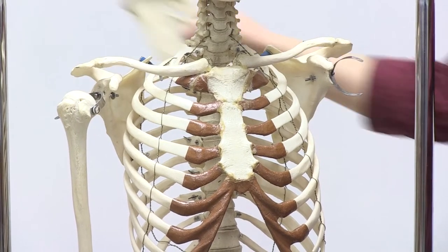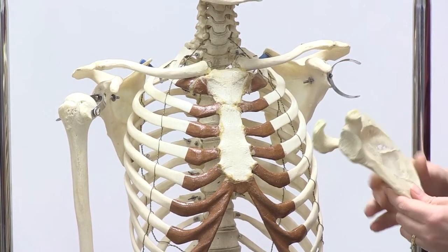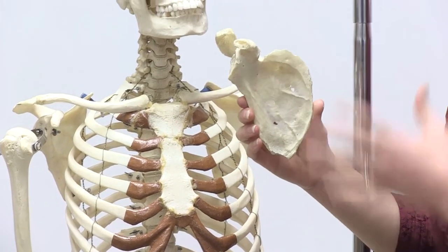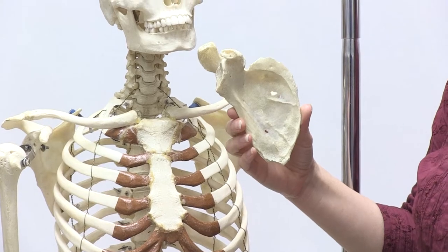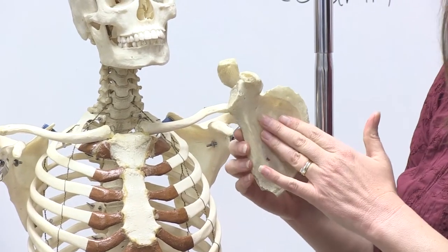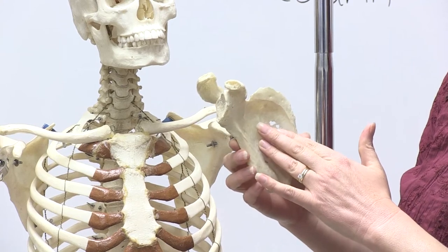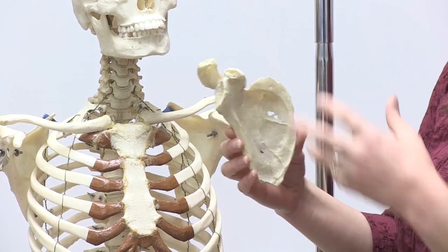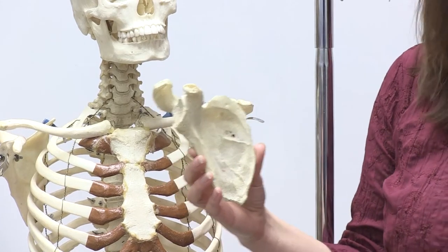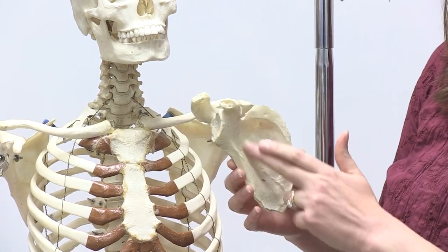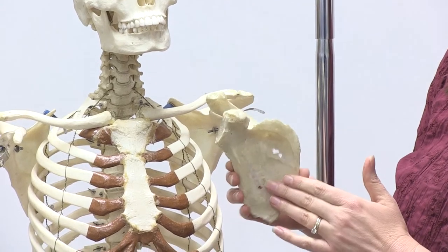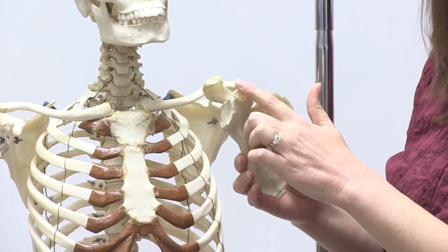Then you'll notice that there are two major features that you see on the anterior side of the scapula. The first one is actually a depression here called the subscapular fossa. This actually is an area where a muscle, which is similarly named called the subscapularis, is attached.